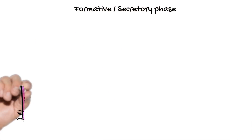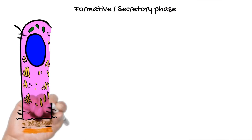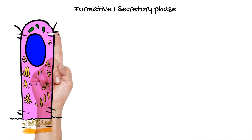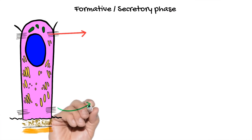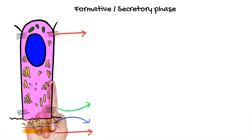In the formative stage, the ameloblasts enter this stage after a layer of dentin has been laid down in the underlying dental papilla. This is required for ameloblasts to actually start secreting the enamel matrix. As the cell is completely differentiated, it starts secreting a layer of enamel immediately next to the mantle dentin, forming the dentino-enamel junction.